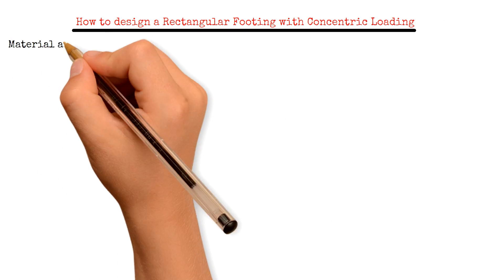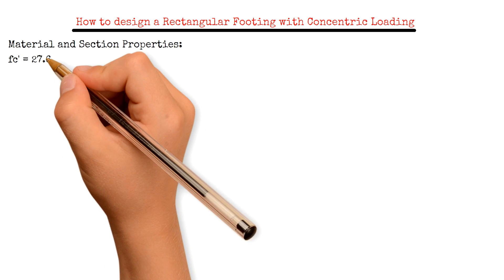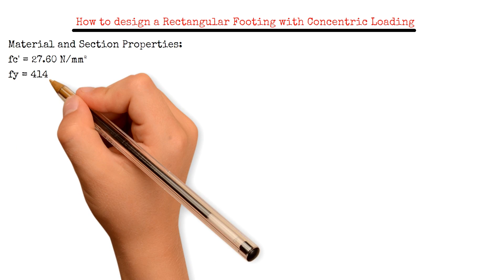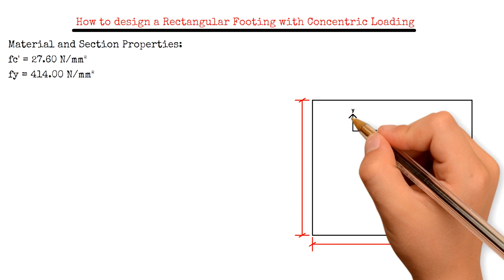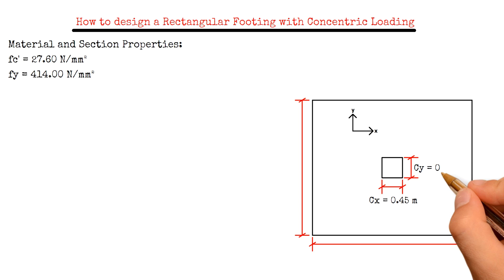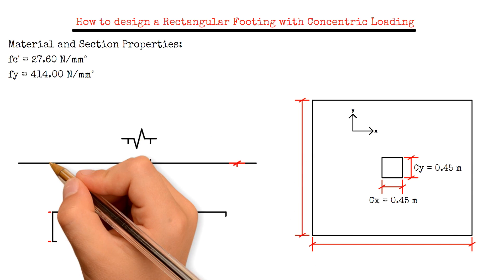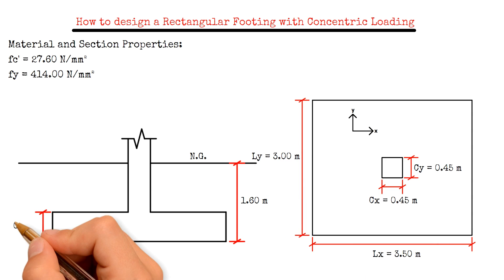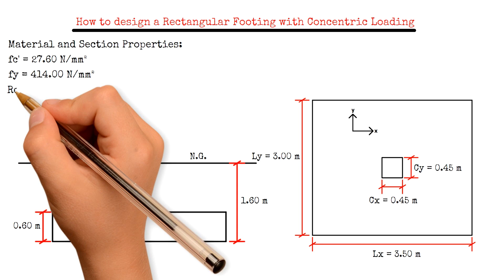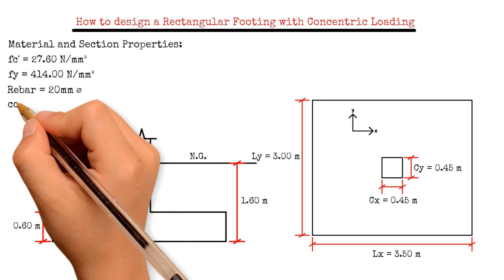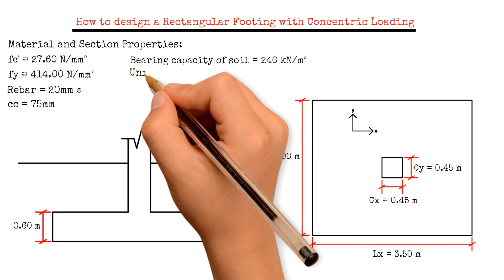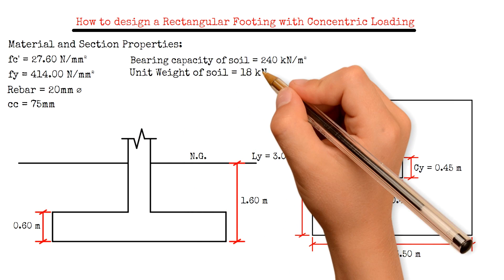First, we will be needing these material and section properties. For the concrete strength, we have 27.6 N per square millimeter. For the steel reinforcement yield strength, we have 414 N per square millimeter. The column section is 450 mm by 450 mm. The base of the footing below the natural ground is 1.6 meters. We will assume the footing dimension is 3.5 m by 3 m by 0.6 m. We will be using 20 mm diameter steel reinforcement and the clear concrete cover is 75 mm. The bearing capacity of the soil is 240 kN per square meter and the soil density is 18 kN per cubic meter.